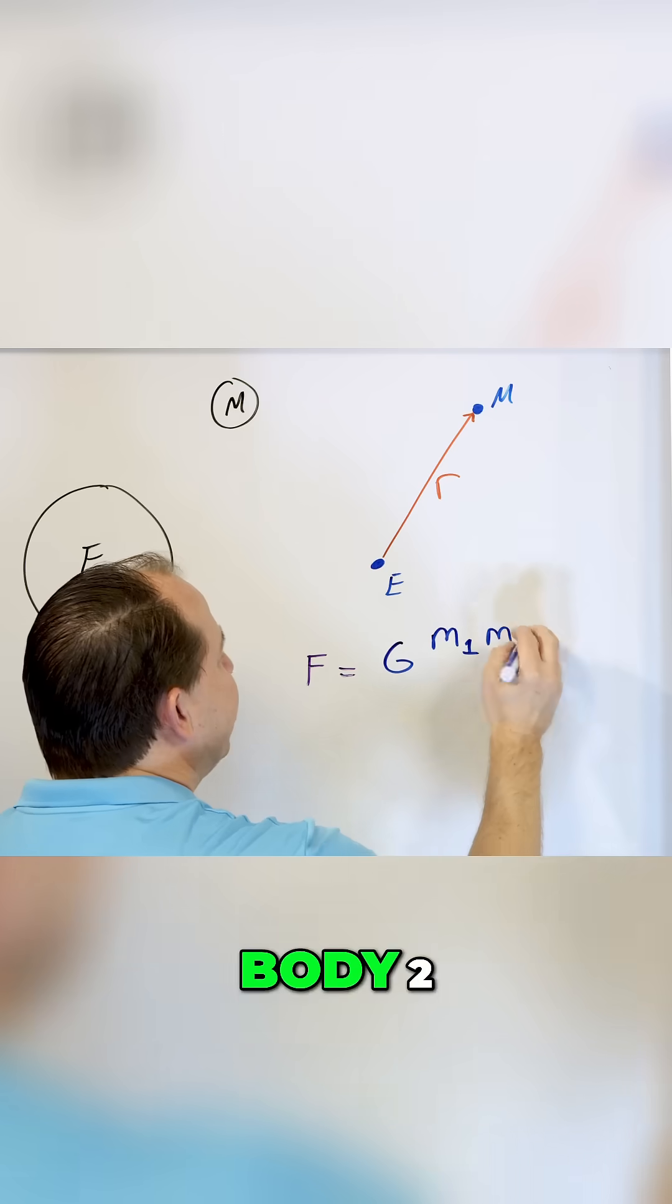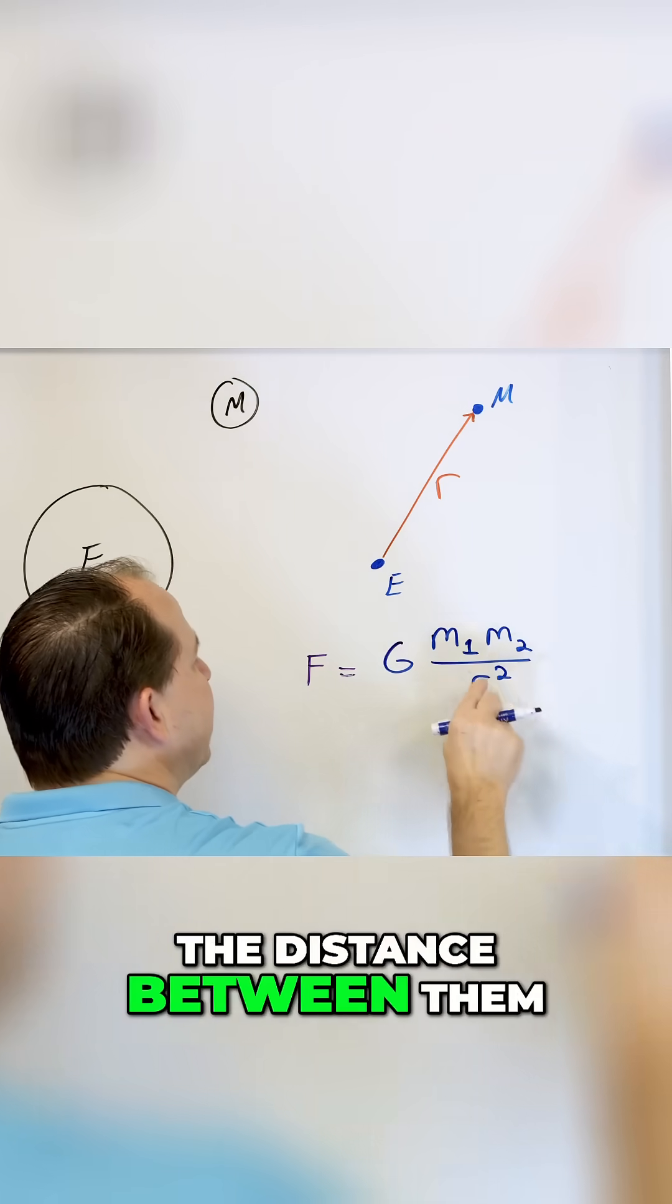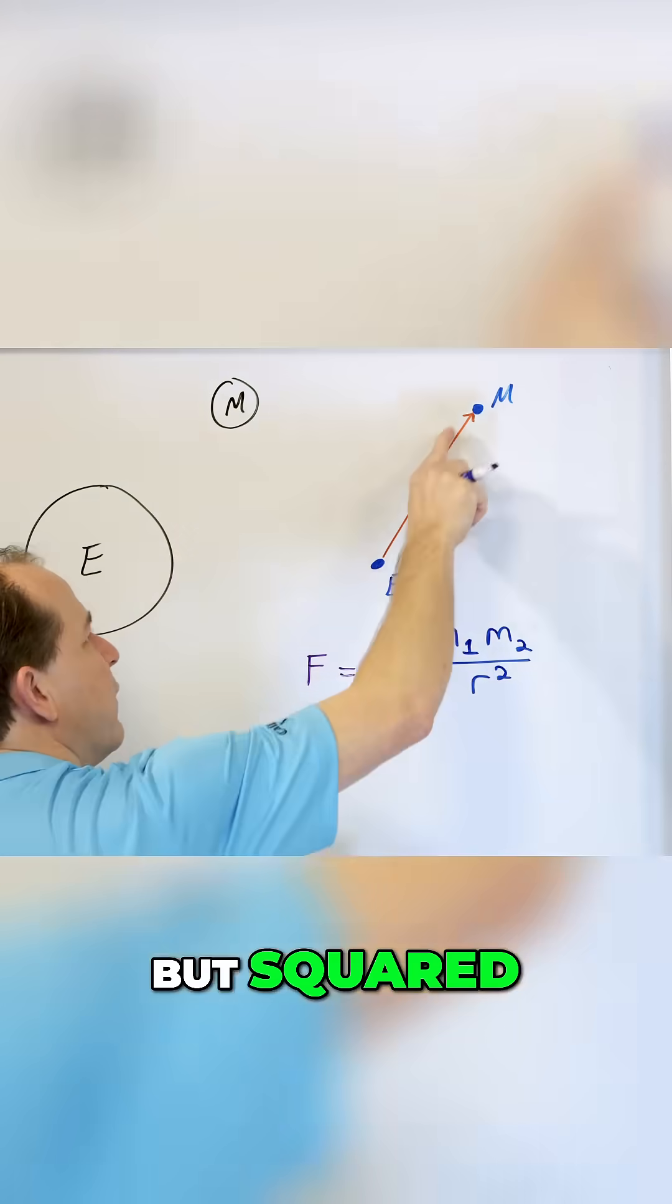like the earth, times the mass of body two, like the moon, and all of that stuff is divided by the distance between them, but squared, the distance between them.